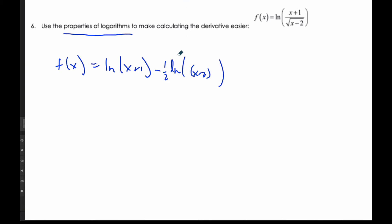And so now I have a much simpler derivative to take. So if I'm going to take the derivative, I'm going to take the derivative of this first part, which is 1 over (x+1), times the derivative of the inside, which is just 1, minus...